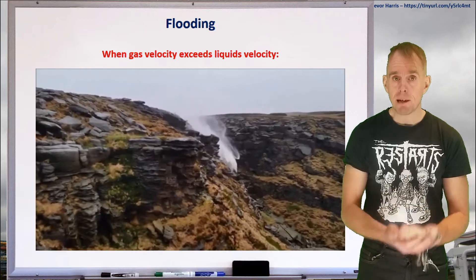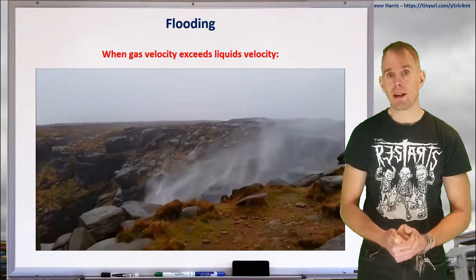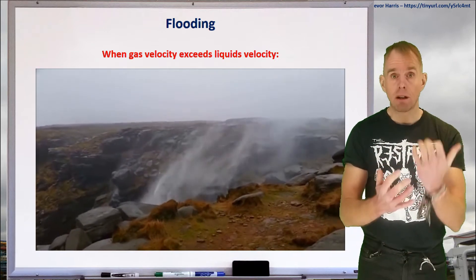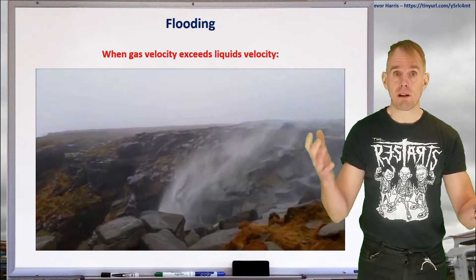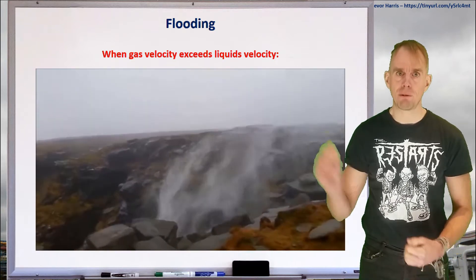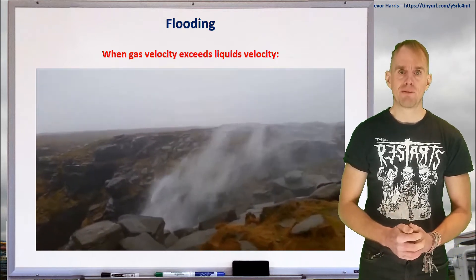So column flooding basically means your gas velocity is too high. Make your column wider, bring your gas velocity down, allow your liquid droplets to fall, and allow your gas to rise without it blowing the liquid out of the top of the column. Don't create Kinder Downfall in your own piece of design work.